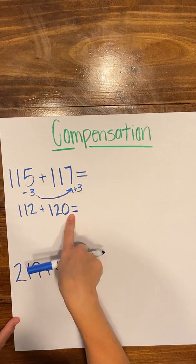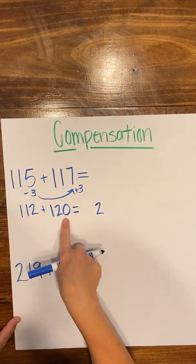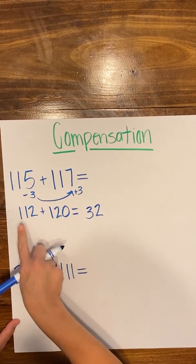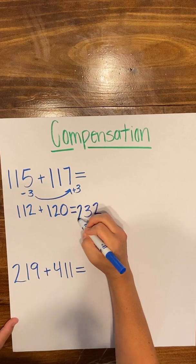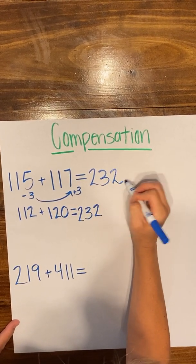And that number, when I look at it together, I know that I'm going to have two in the ones place. One plus two in the tens place is going to give me three, and then one plus one is going to give me 232. So my sum here is going to be 232.